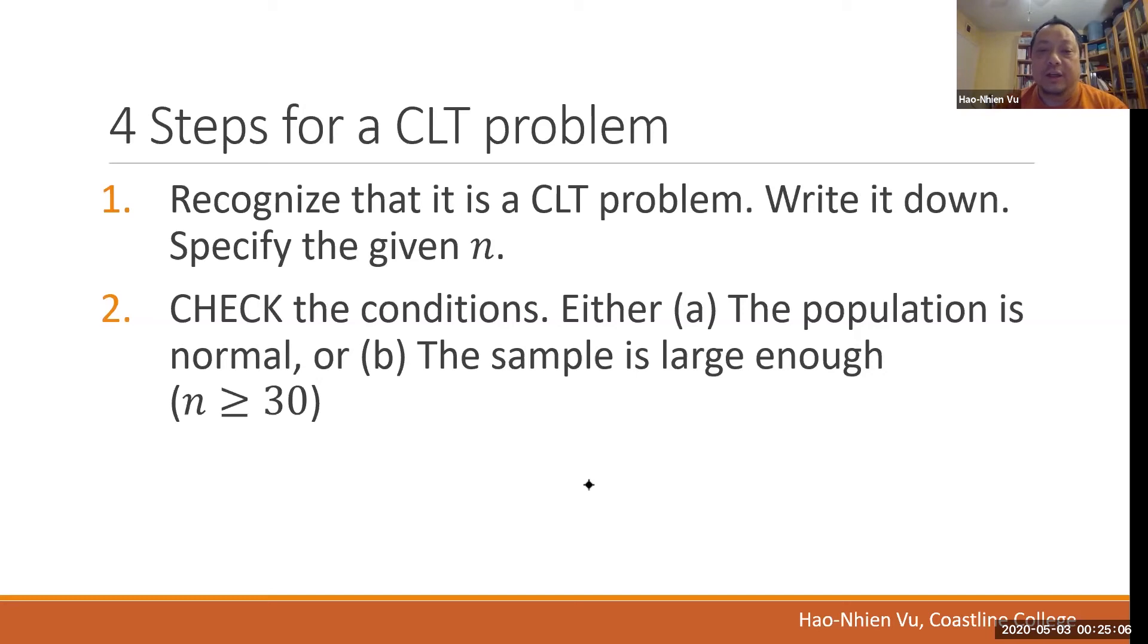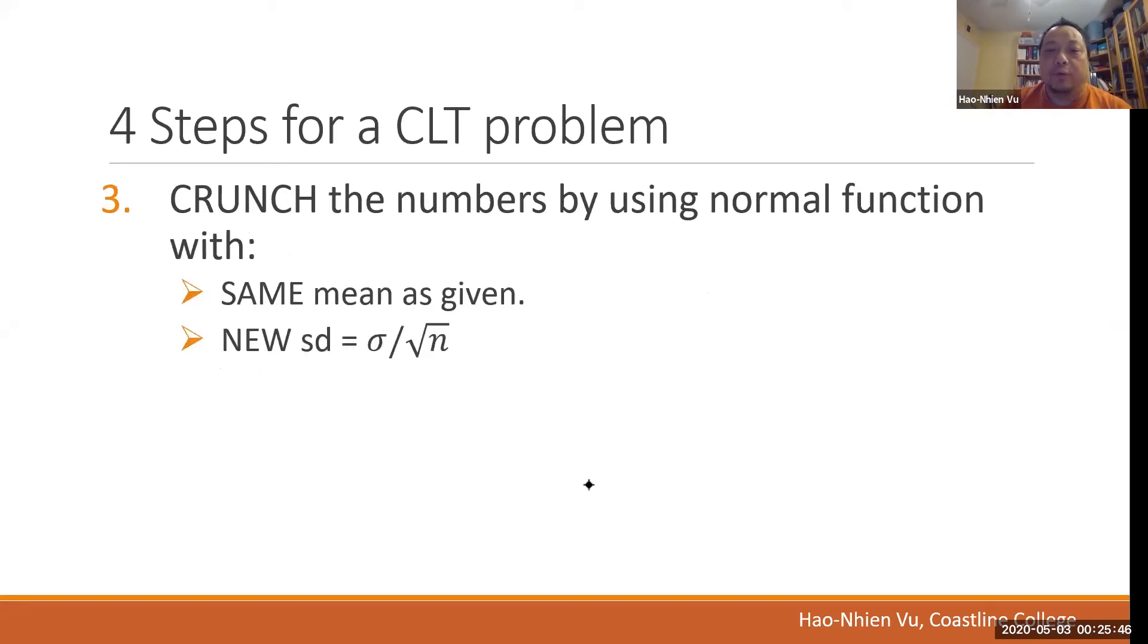Step two, check the conditions. Do we have either A, the population is normal, or B, the sample is large enough. Our rule of thumb again is that n is greater than or equal to 30. If the conditions are not met, the CLT does not apply, and you cannot do CLT. Except that in this class, what happens is that if the conditions are not met, you must say so on paper. Say that the conditions are not met, but then move on anyway. Don't stop. And to move on means step three.